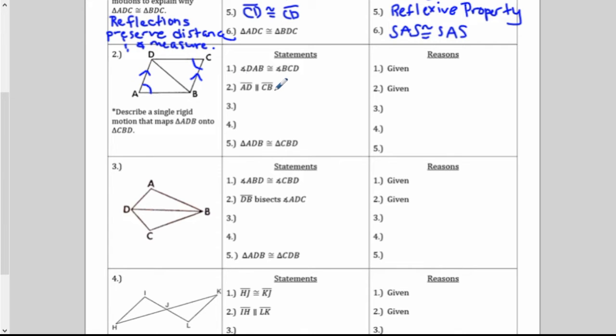Whenever you have parallel lines, you're going to get either corresponding, alternate interior, or same side interior angles. Well, if AD is parallel to CB, we can get these corner angles to be congruent to each other. I'm going to have to put two markings because I already have single markings from that other given. And these corner angles here, those are alternate interior angles. They're inside the parallel lines, and they're on alternate sides of this transversal. DB is being the transversal. Notice that the angles I just marked in touch the parallel sides, right? They have to touch it.